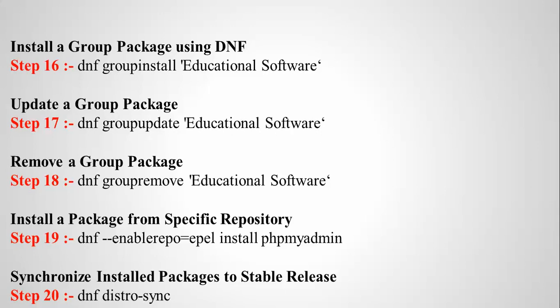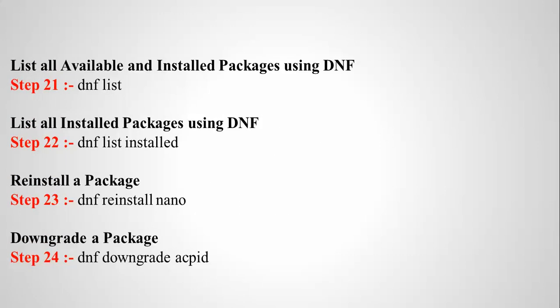To remove a group, type: dnf group remove 'Educational Software'. These are the simple methods — group install, group update, and group remove. To install a package from a specific repository, use: dnf --enablerepo=epel install phpmyadmin. You can also install Apache or MySQL by replacing 'phpmyadmin'. To synchronize packages with the stable release, use: dnf distro-sync.